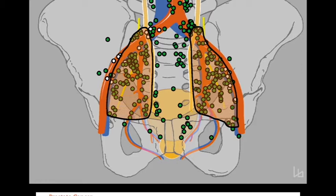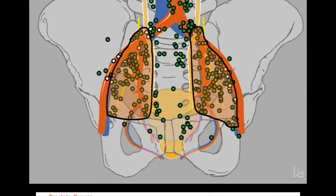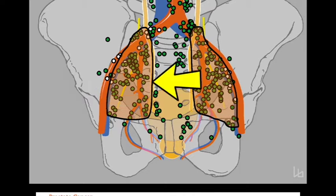Cranially, the crossing of the ureter with the common iliac artery. Caudally, the femoral canal. Laterally, the medial border of the external iliac artery. Medially, the internal iliac vessels.